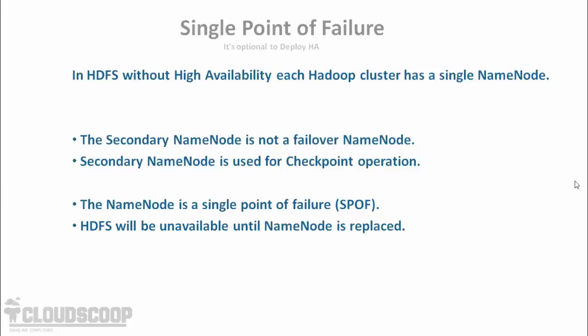In such a case, if the name node goes down, HDFS will be unavailable. Therefore, we can call the name node a single point of failure when we configure it without high availability.